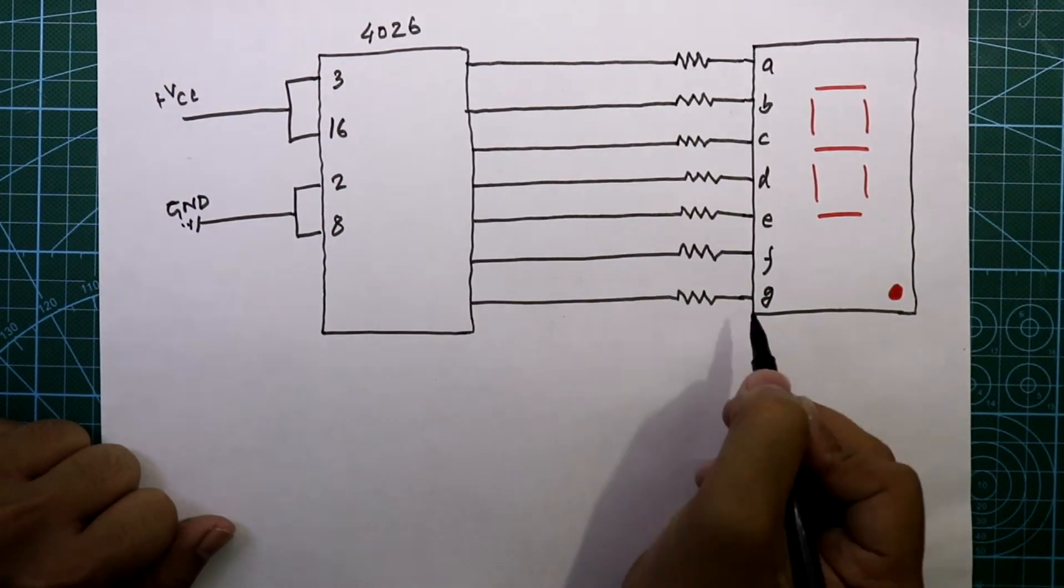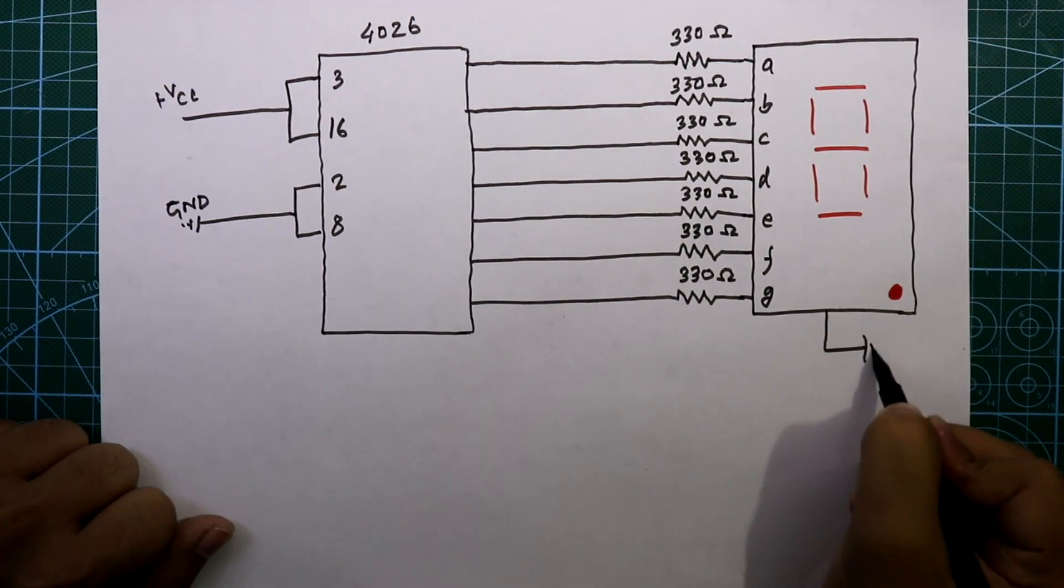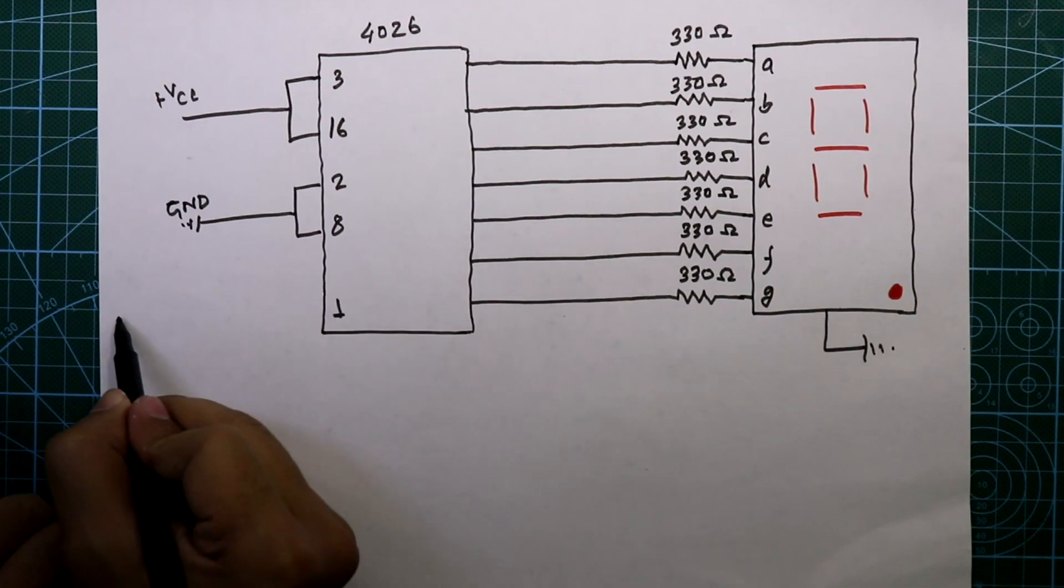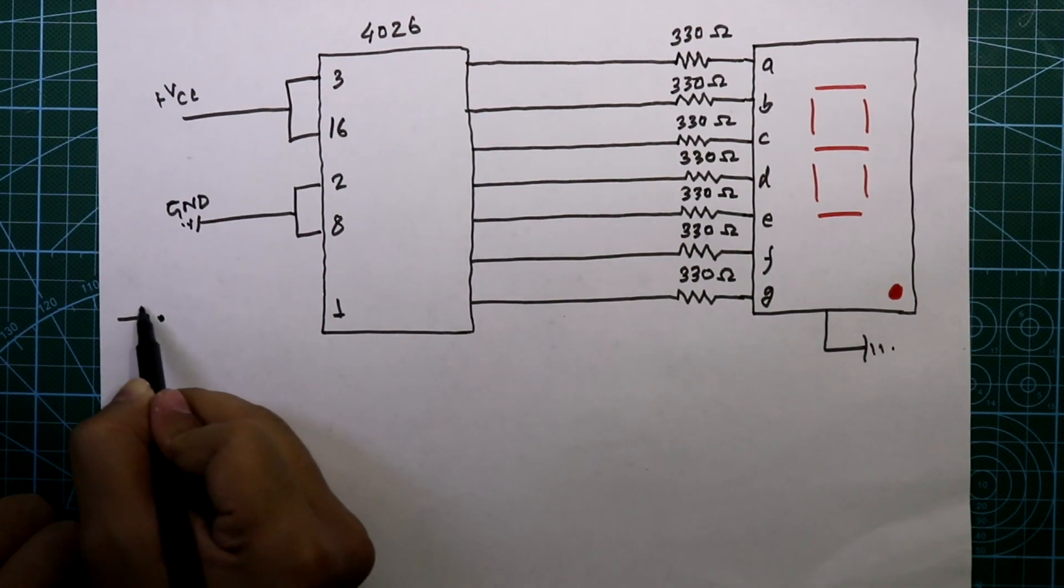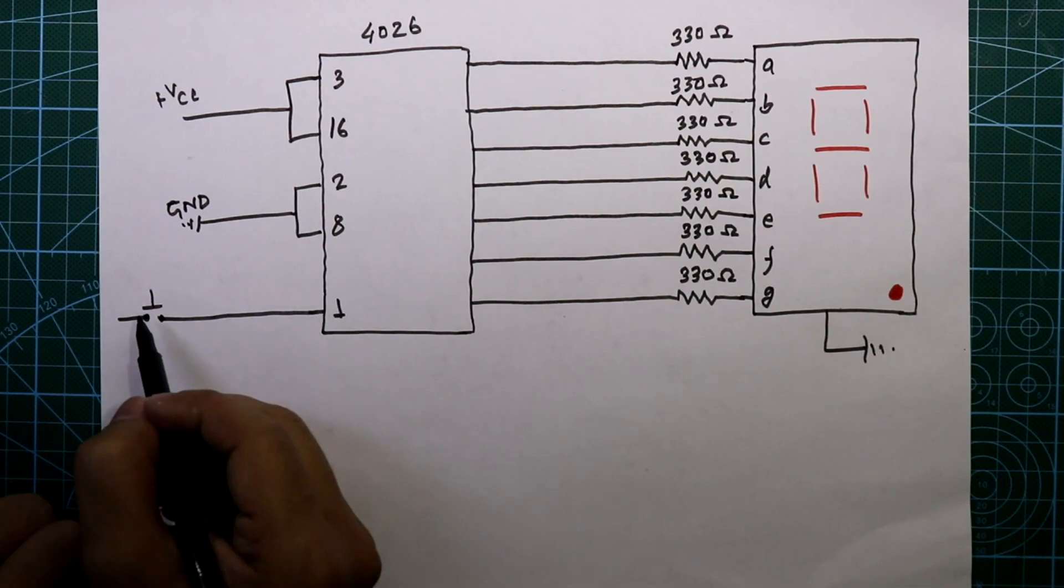Now in this IC we have to provide clock input, so I'll provide clock input with a push-to-on switch. The other side of the switch is connected to plus VCC, and pin number 1 is connected to ground through a 1 kilo-ohm resistor.